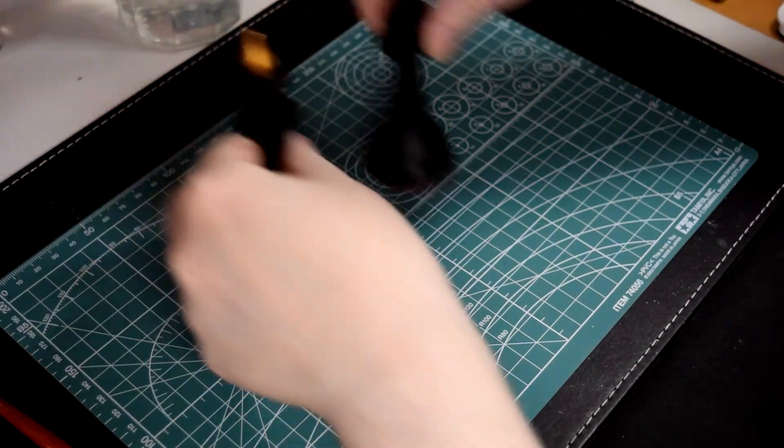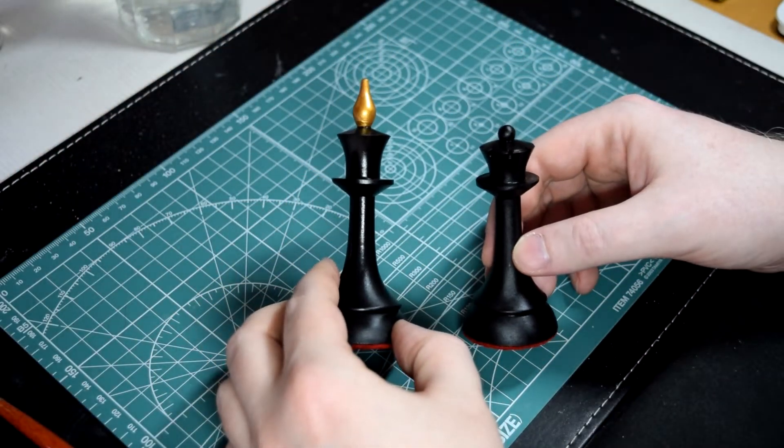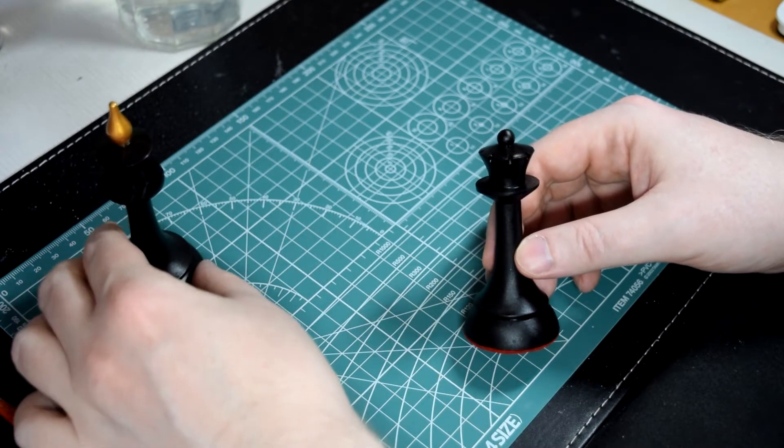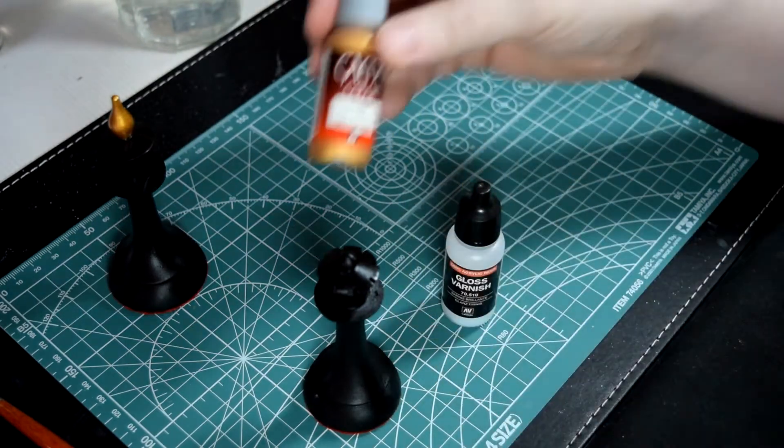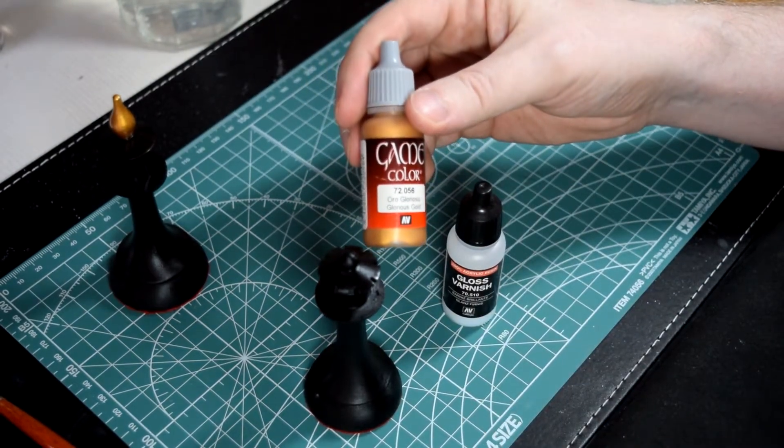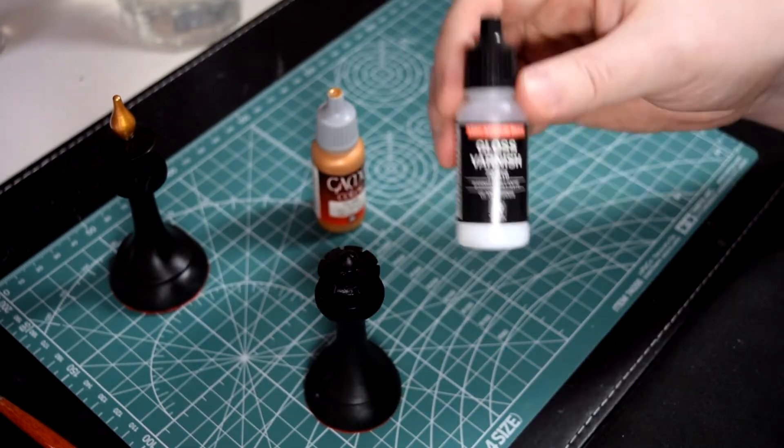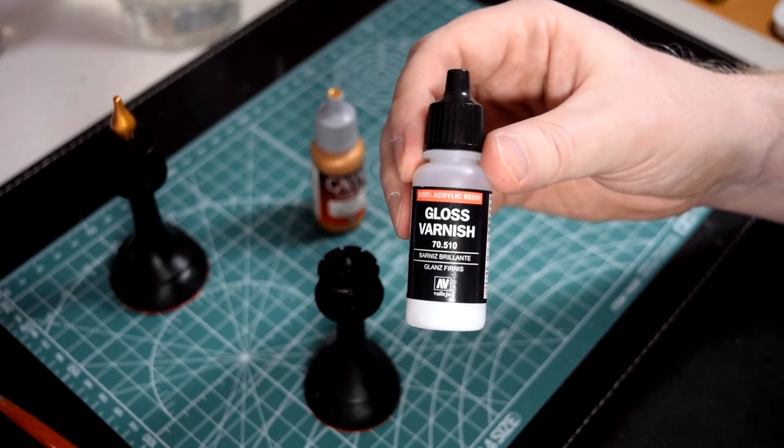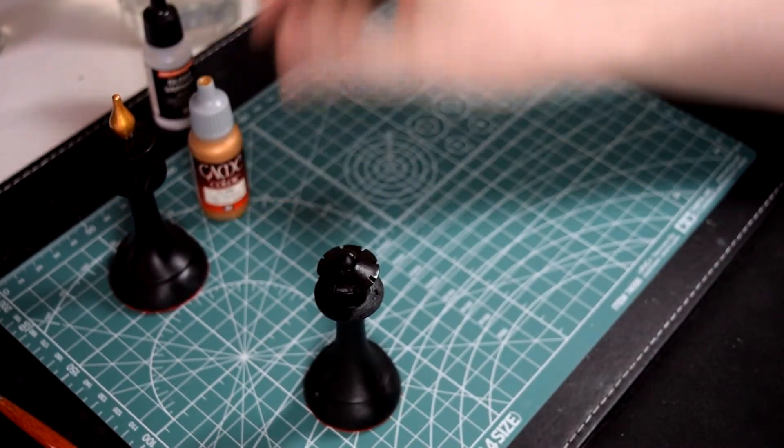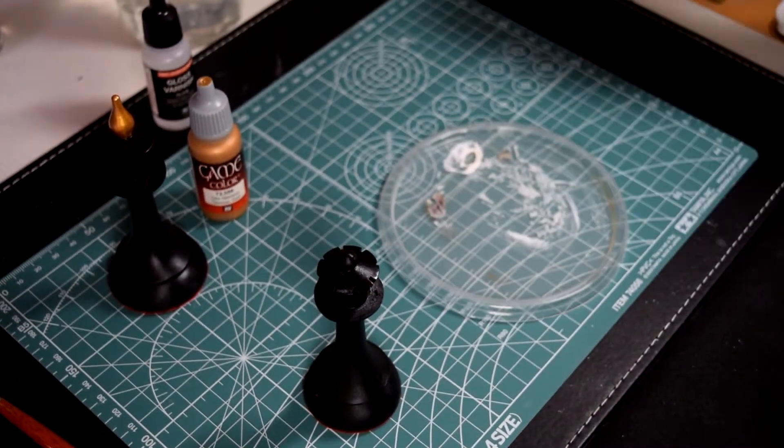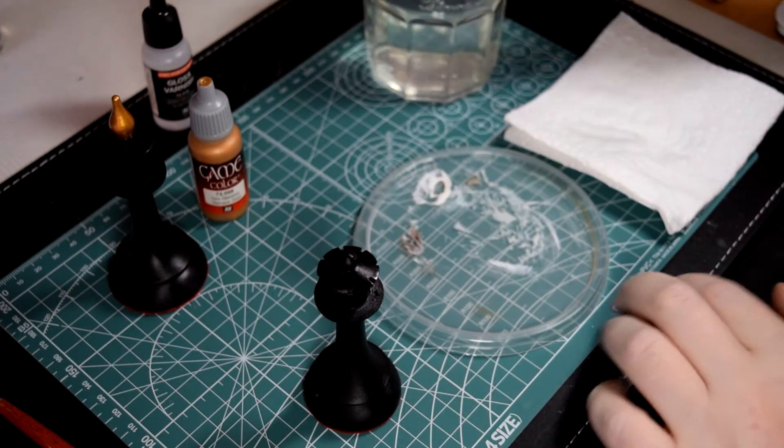These lacquer style pieces have gold finials, so I'm going to paint them with acrylic paints, and then use gloss varnish to seal it. So this is Vallejo's game color, glorious gold. I just need some water, tissue, and a couple of brushes.